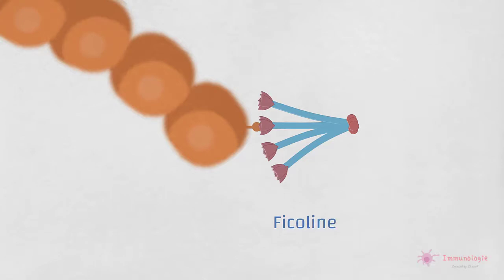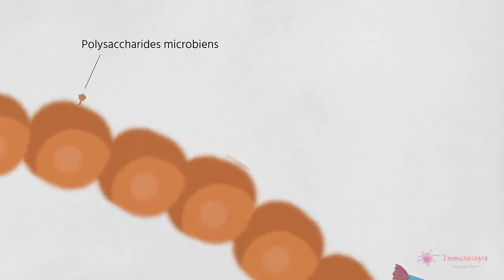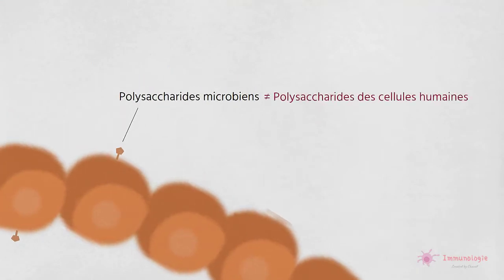Ces glucides sont des constituants communs des parois cellulaires microbiennes et sont distincts de ceux se trouvant sur les surfaces des cellules humaines. Il s'agit donc d'une reconnaissance directe par les composants du système du complément, sans intervention des anticorps.